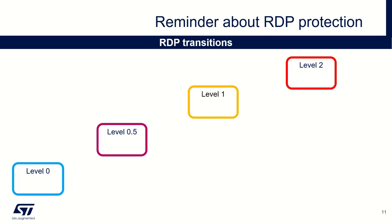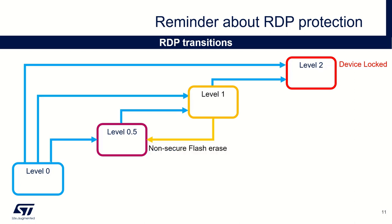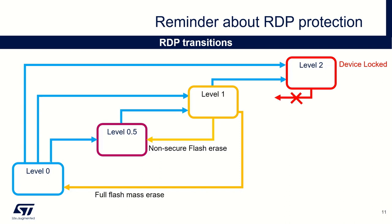So we have described the different RDP levels. Let's see now the possible level modifications and their consequences. There is no specific restriction to increase the RDP level. You can jump from level 0 to 0.5, then to 1, then to level 2, and you can also directly jump from level 0 to any level. The regression from level 1 to level 0.5 implies the erasure of the non-secure flash content. The regression from level 1 to level 0 implies a full flash mass erasure. Once the device is locked in RDP level 2, you can't change this level anymore. On STM32L5 family, direct regression from 0.5 to 0 was possible, but this is not possible anymore on STM32U5. From RDP level 0.5, you must first increase to RDP level 1, and then you can do the regression to level 0.